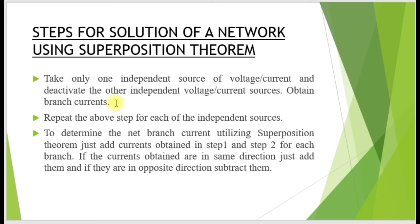If you are taking a voltage source and need to deactivate the current source, the current source can be deactivated by deleting the source and keeping the respective circuit terminals open. So voltage sources are deactivated by shorting the circuit terminals, and current sources are deactivated by opening the respective circuit terminals. Then obtain branch currents.